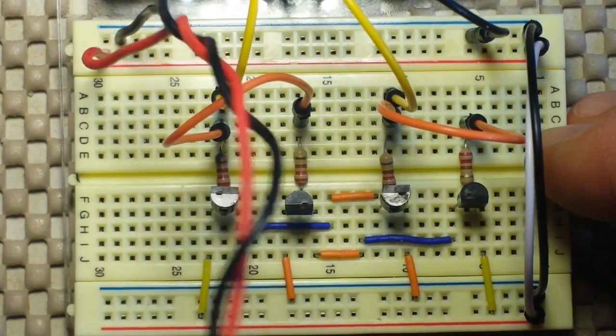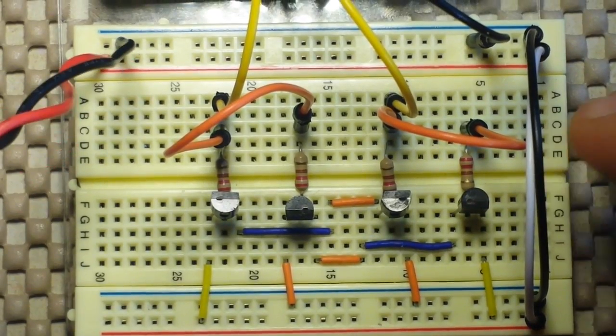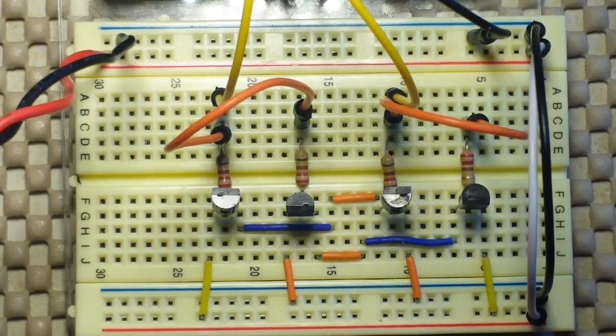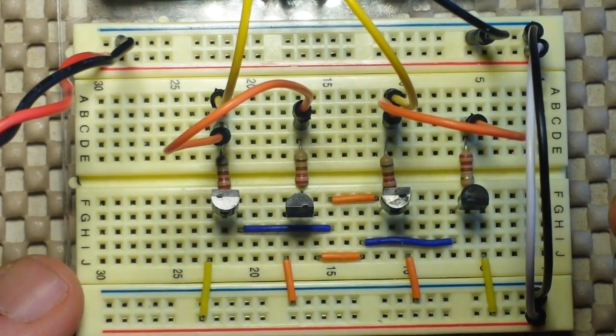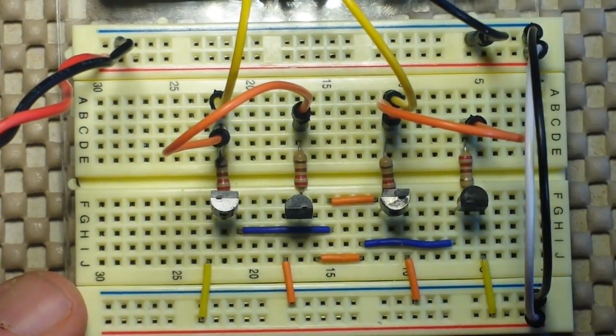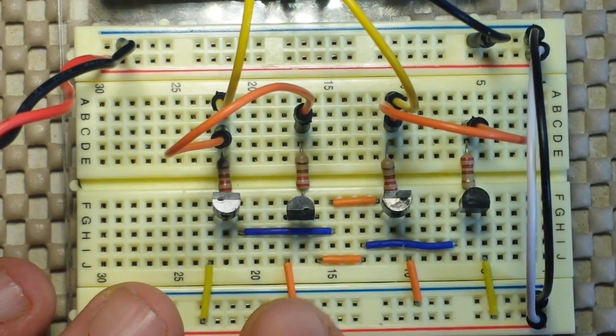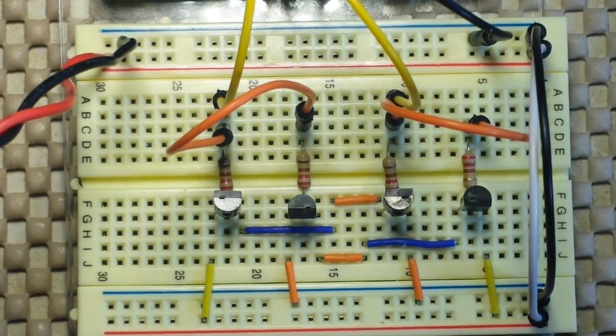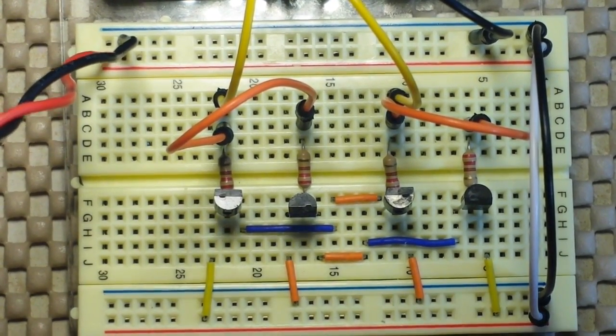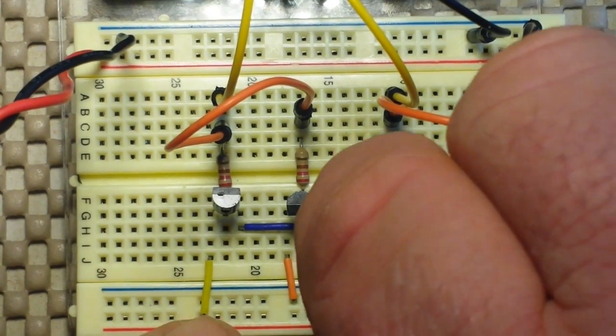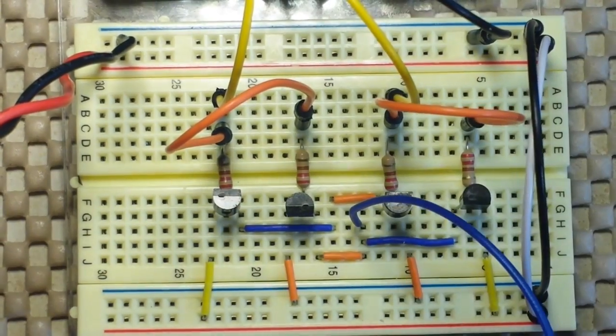Now this circuit is called an H-bridge, and what it allows us to do is by turning on one pair of these transistors it'll turn the motor one way, and by turning on the other pair of transistors it will turn the motor the other way. Let's get it hooked up here and we'll talk a little bit more about it.